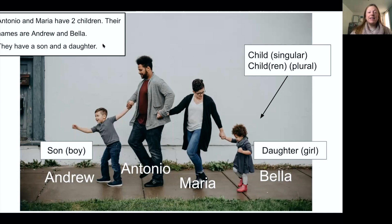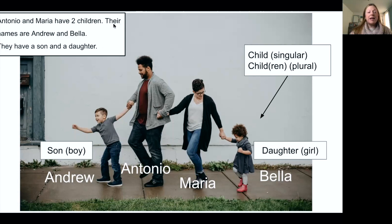Let's take a look at these sentences. Antonio and Maria have two children. Notice we are using the verb 'have' to talk about family — we will look at this more later. Their names are Andrew and Bella. They have a son and a daughter.